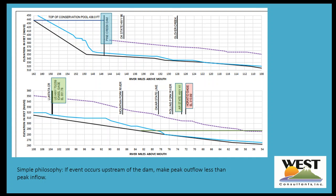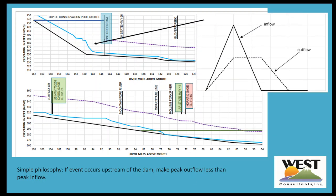A very simple philosophy in the operation of a lot of reservoirs is that you don't want to make the peaks downstream worse than what would have occurred had the dam not been in place. For an event occurring in the upstream areas, to make sure I'm not making the peak worse, I can ensure that the ordinates on my outflow hydrograph — shown by the dashed line — are less than the ordinates of my inflow hydrograph until the inflow hydrograph peaks. On the recession limb, my outflow will eventually exceed my inflow, and that's necessary in order to empty any stored floodwaters.